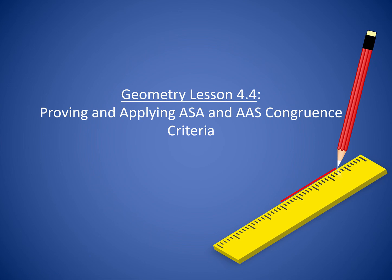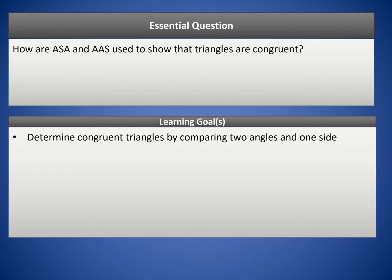Hello class, welcome to lesson 4.4. Today we're going to be talking about proving and applying the ASA and AAS congruence criteria. Our essential question is: how are ASA and AAS used to show that triangles are congruent? Our learning goal is to determine congruent triangles by comparing two angles and one side.